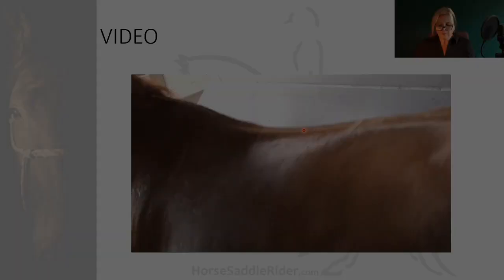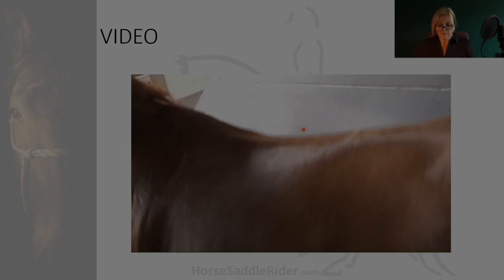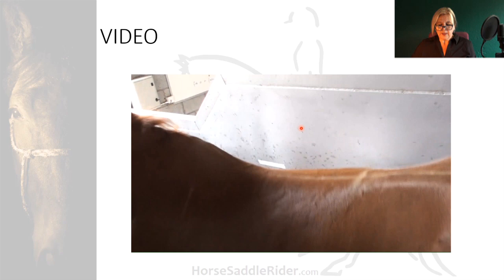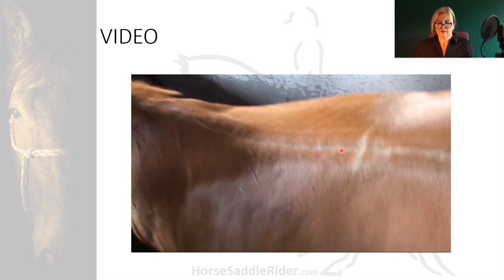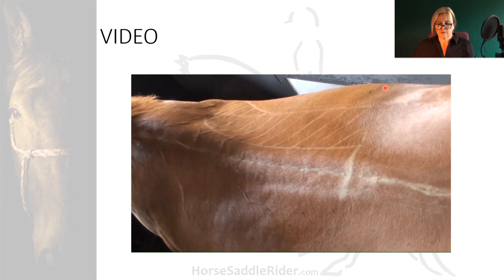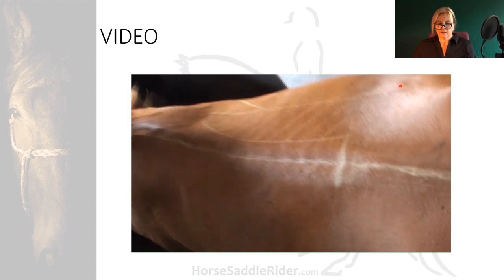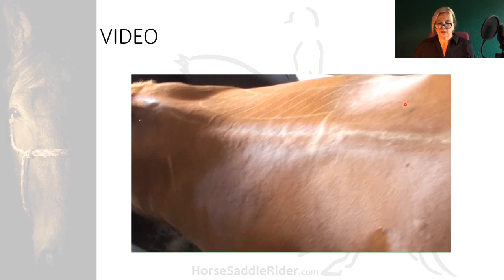Trot is not a good gait for rehabilitation and suppling. The horse will transition to walk shortly — this is the thoracic lumbar region marked here, and longissimus. And back to walk — more rotation visible.